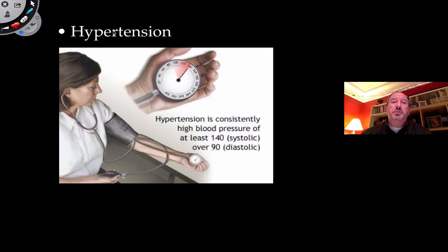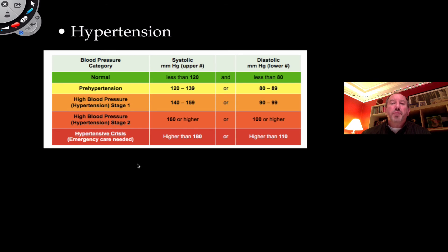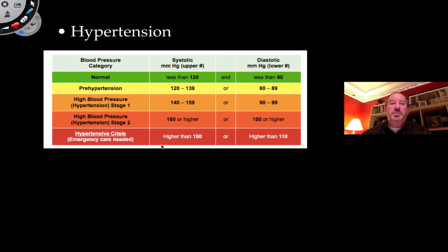High blood pressure is known as hypertension — blood pressure that has a higher reading than normal. Normal is 120 over 80. Hypertension would look like a systolic around 140 and a diastolic around 90. Normal is less than 120 over 80 — it could be 110 over 70. But when numbers exceed 120 over 80, you could be pre-hypertensive, hypertensive stage 1, or hypertensive stage 2 if it's getting up to 160 over 100. Anything higher than that, you'd want to seek medical attention immediately.